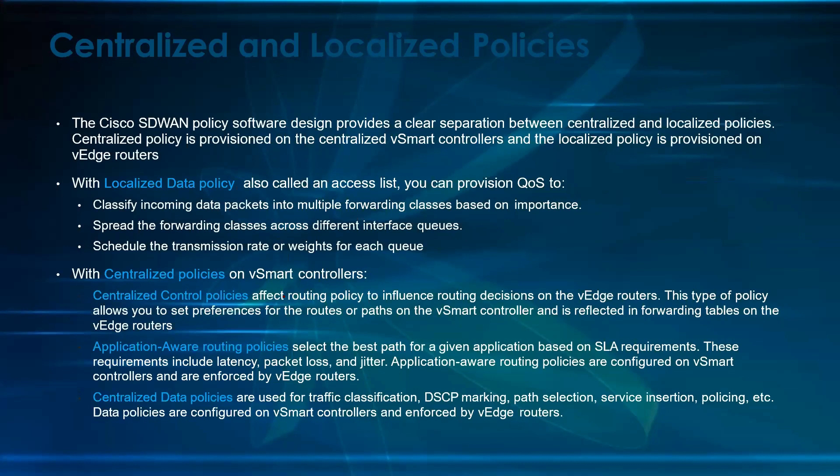With the localized data policy, also called an access list, you can provision QoS by classifying incoming data packets into multiple forwarding classes based on importance, spreading the forwarding classes across different interface queues, and scheduling the transmission rate for each queue. All of this is localized data policy, which sits directly on the vEdge device.